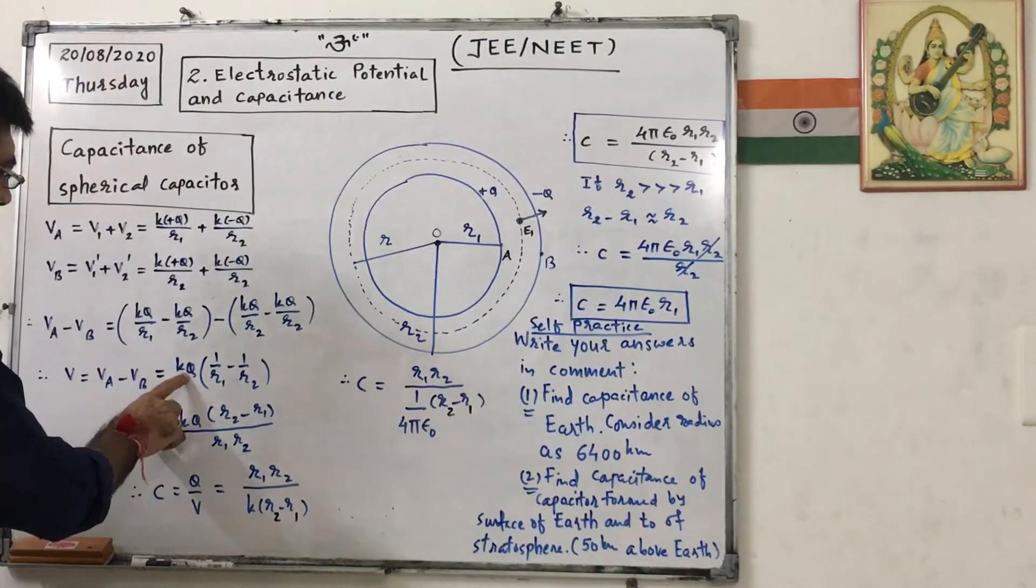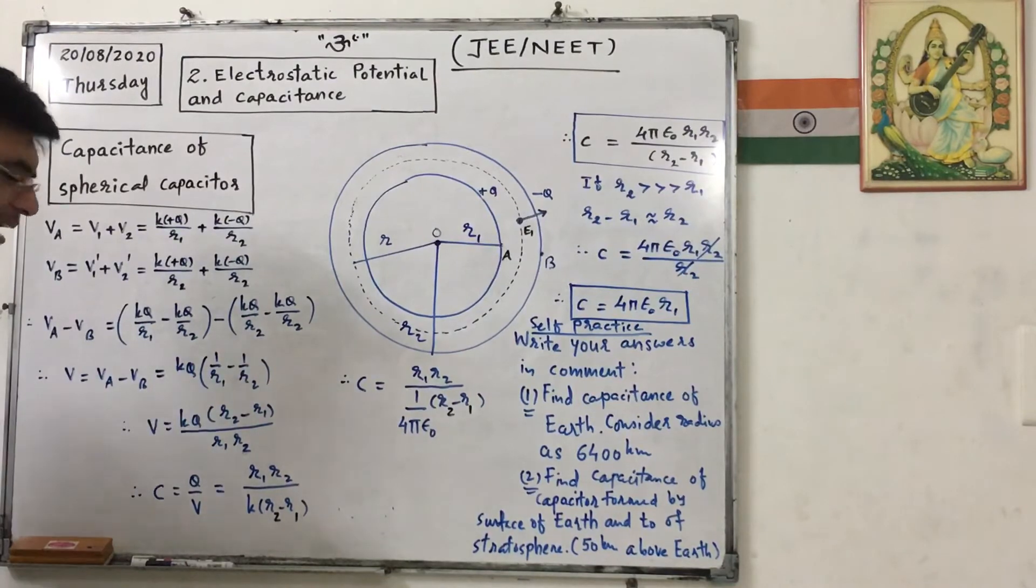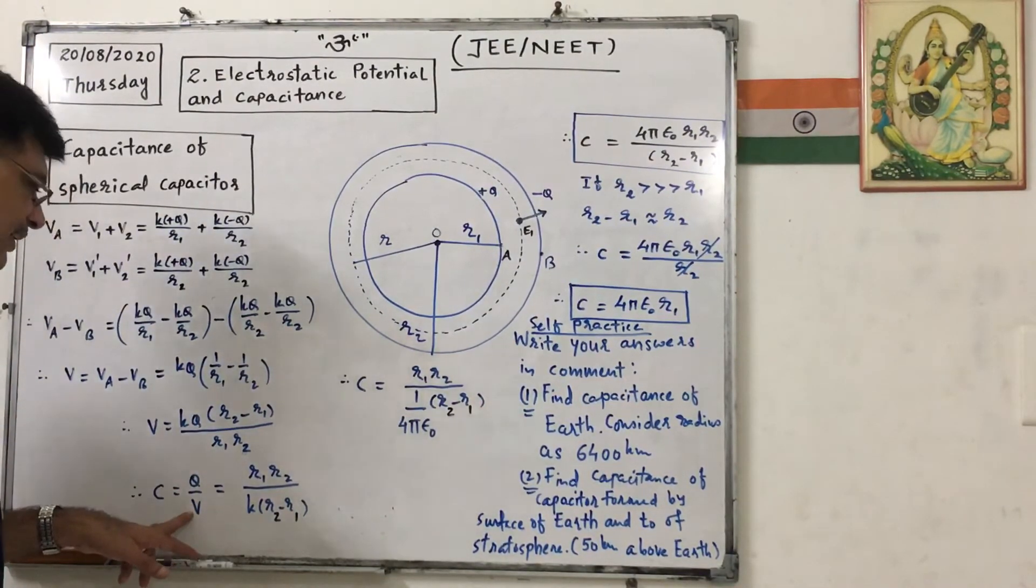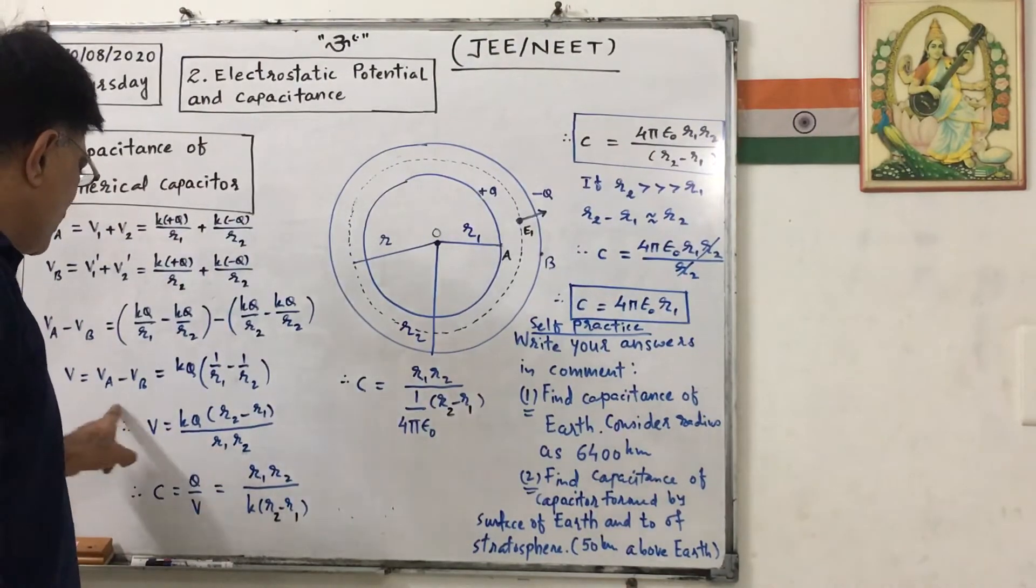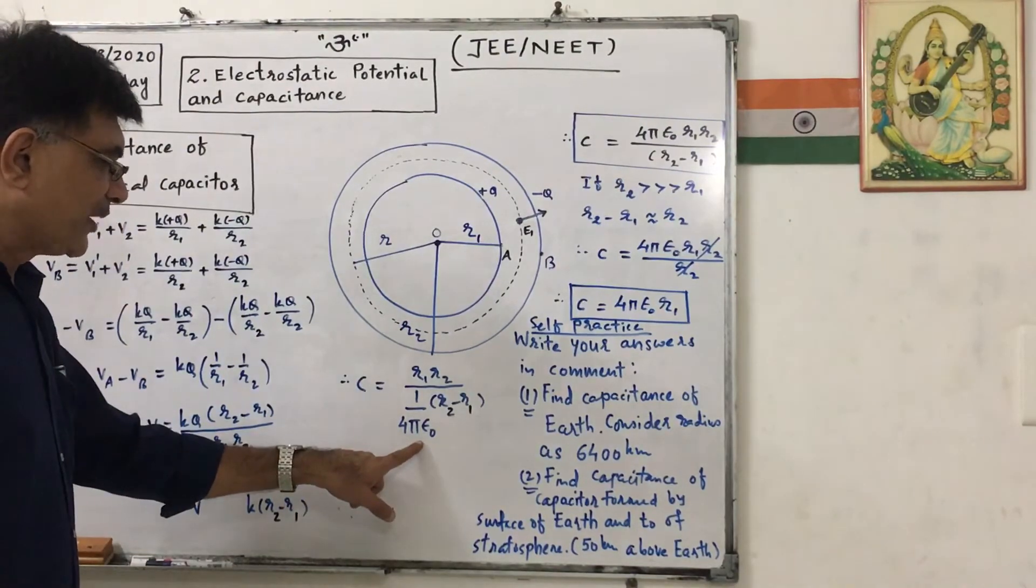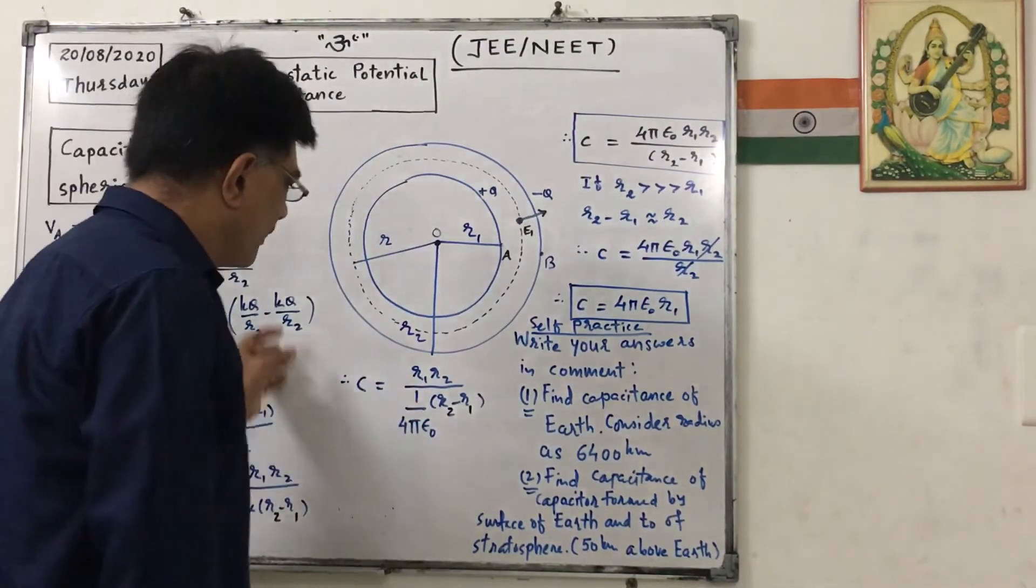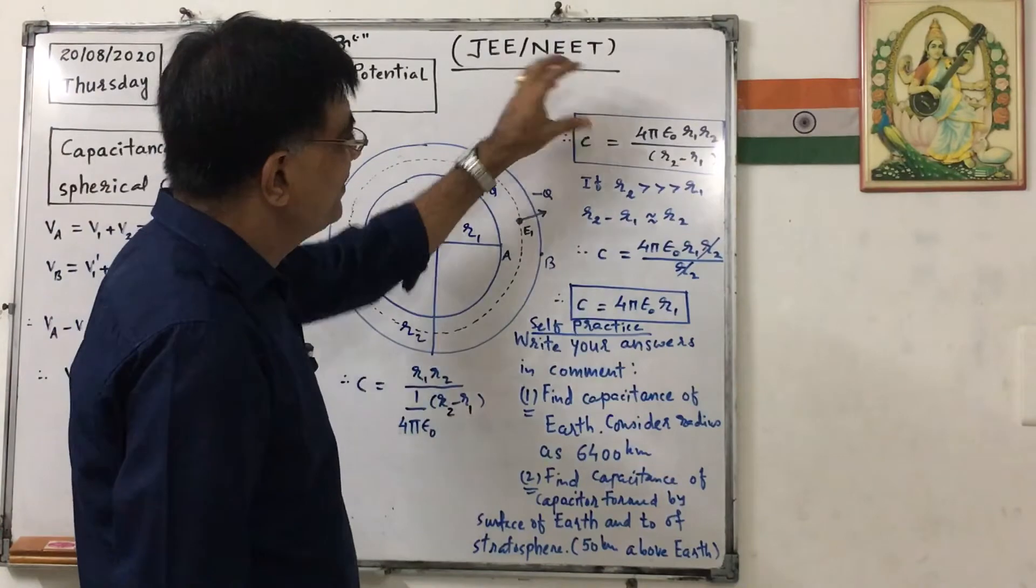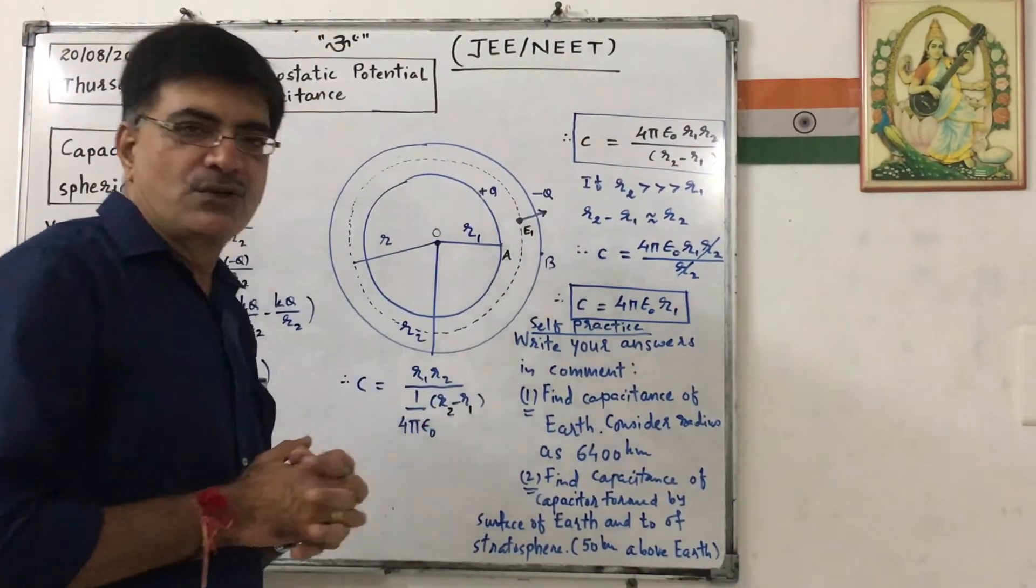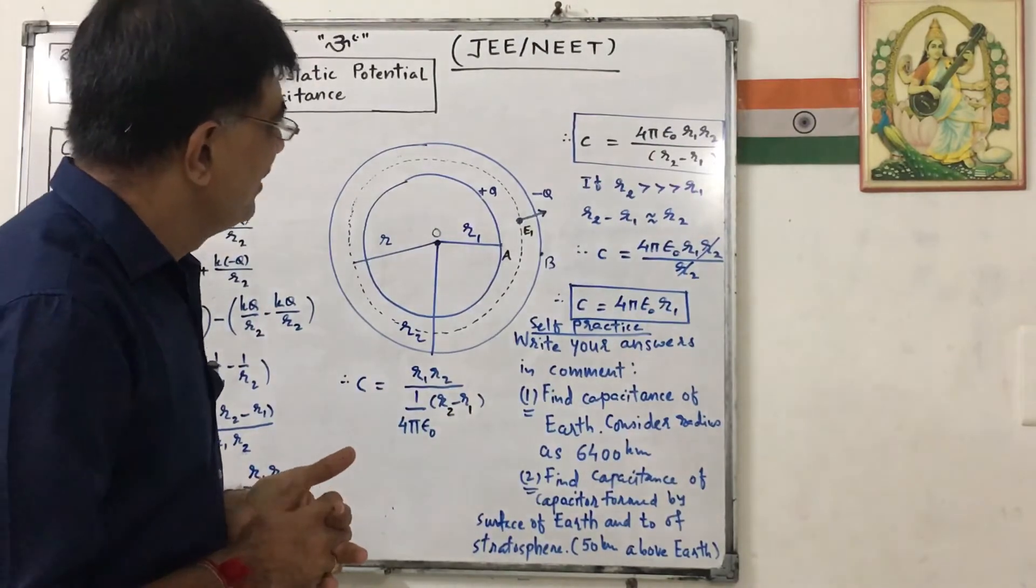So V will be equal to KQ into R2 minus R1 upon R1 R2. We know that capacitance equals to Q by V, so Q by V will be equal to R1 R2 upon K into R2 minus R1, where K equals to 1 upon 4 pi epsilon naught. So this 1 upon 4 pi epsilon naught will go in numerator. So it is 4 pi epsilon naught R1 R2 upon R2 minus R1.